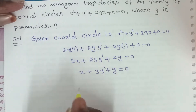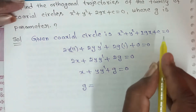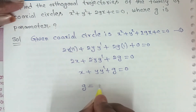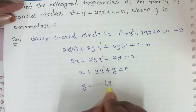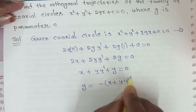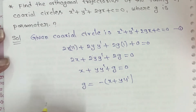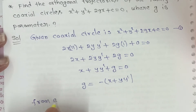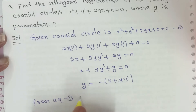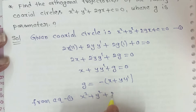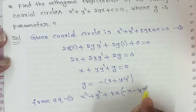So g = -(x + y·y'). Now substituting this g value into equation 1: x² + y² + 2x·(-(x + y·y')) + c = 0.